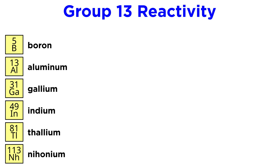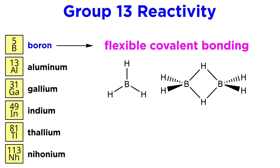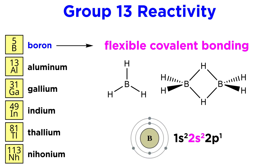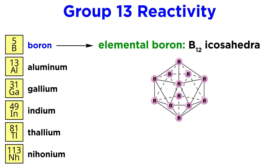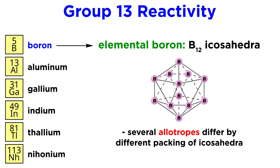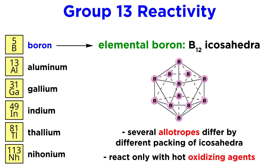In terms of the chemistry of these elements, boron is perhaps the most interesting, mainly due to the flexibility of the covalent bonding it can participate in. This has to do with the dominant S character of its valence electrons, which allows for good flexibility in bonding directions. Elemental boron tends to be crystalline, built up of B12 icosahedra. There are several allotropes that differ in the way these icosahedra are packed, and they are quite inert, reacting only with hot oxidizing agents.